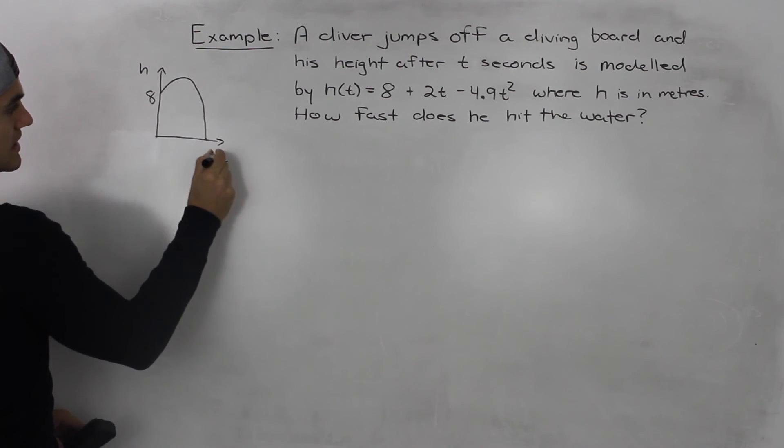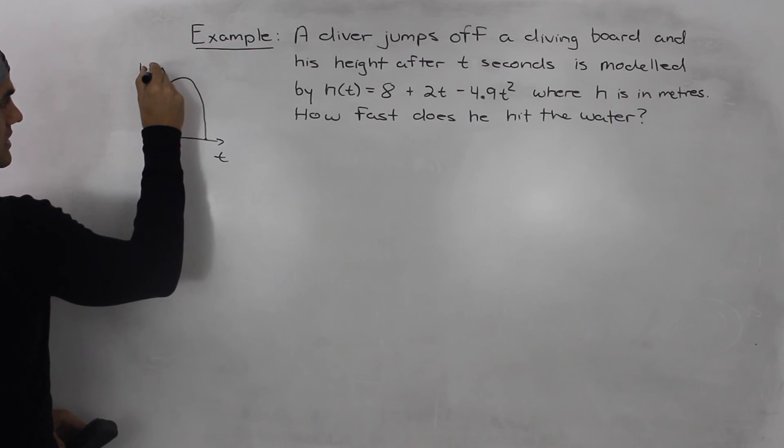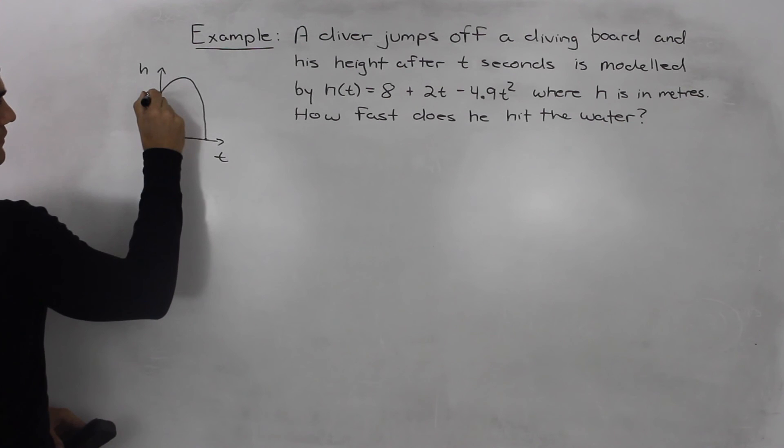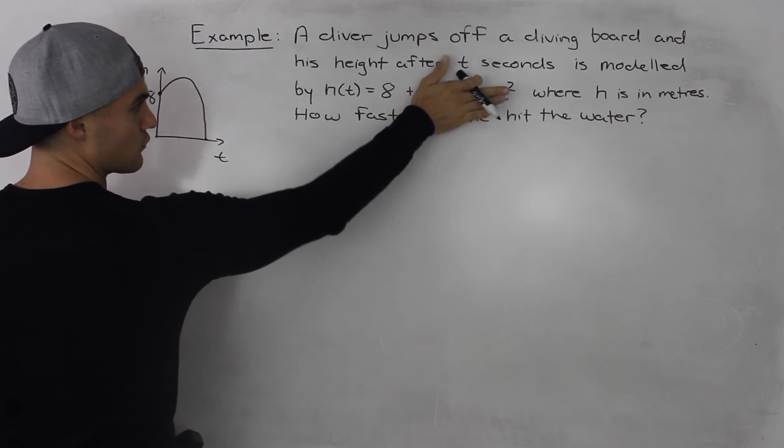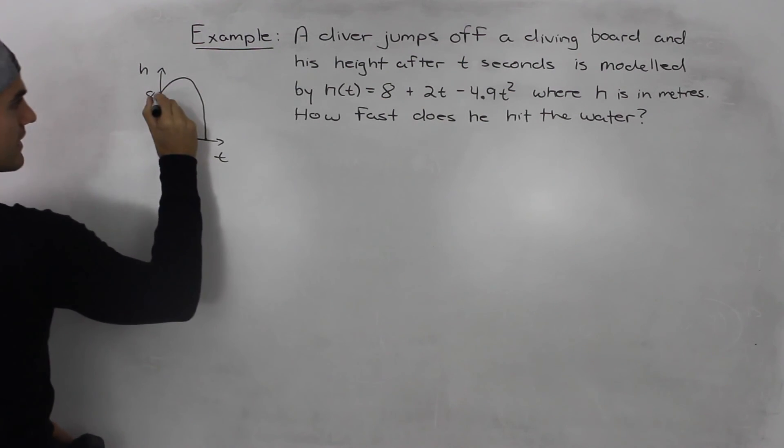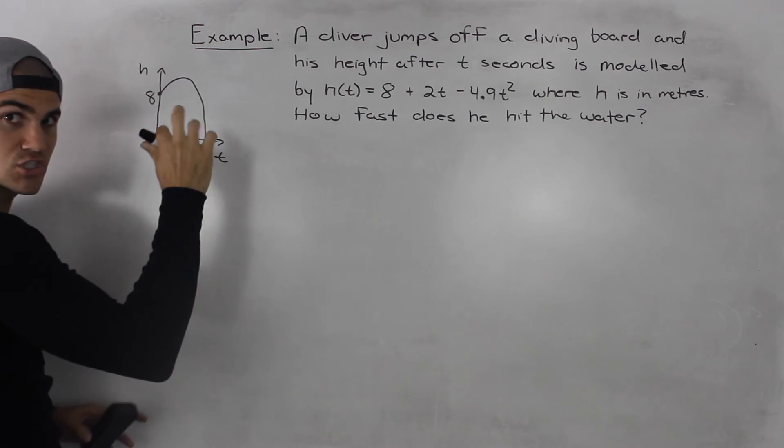So t is the independent variable, h is the dependent variable. The diver jumps off a diving board that's 8 meters high because if we plug in 0 for t we would just be left with 8. So 8 is like the h intercept.